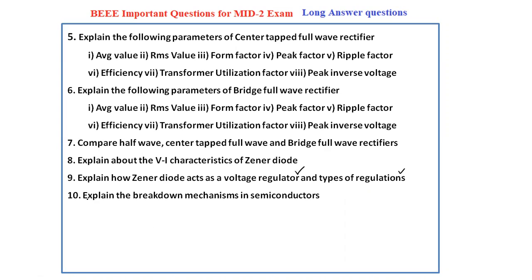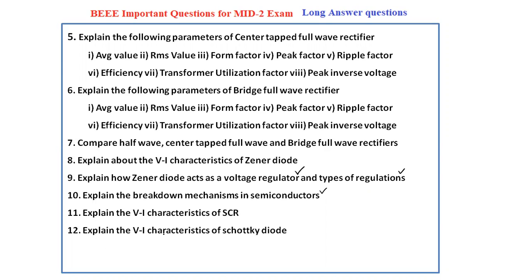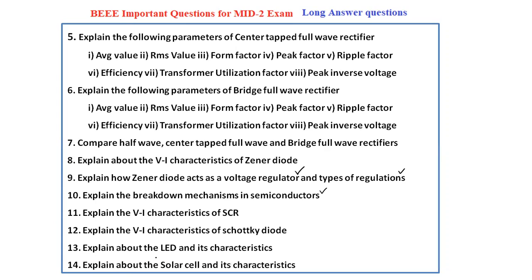The next question is explain the breakdown mechanisms in semiconductors. There are two breakdown mechanisms: avalanche breakdown and Zener breakdown. Next, explain the VA characteristics of the SCR (silicon controlled rectifier). Next, explain the VA characteristics of the Schottky diode. There are five special purpose devices: Zener diode, SCR, Schottky diode, LED, and solar cell. Explain about the light emitting diode and its characteristics, and explain about the solar cell and its characteristics.